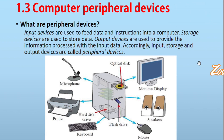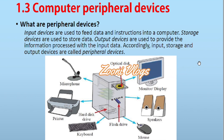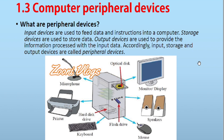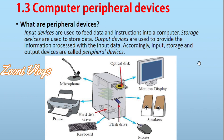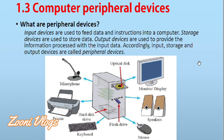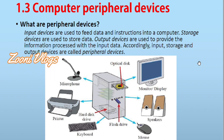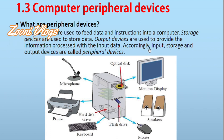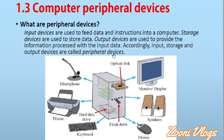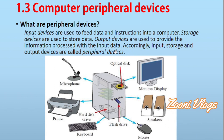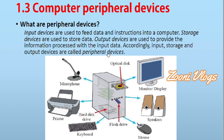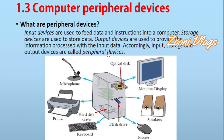We are going to identify what peripheral devices are. Input devices are used to feed data and instructions into a computer. Storage devices are used to store data — when we enter data via input devices, storage devices take and store that data. Output devices are used to provide the information processed from the input data. Input, storage, and output devices are all called peripheral devices.